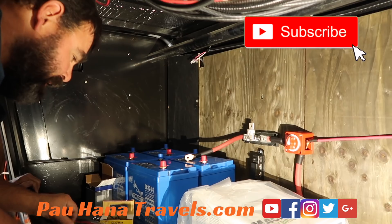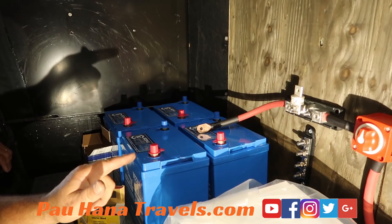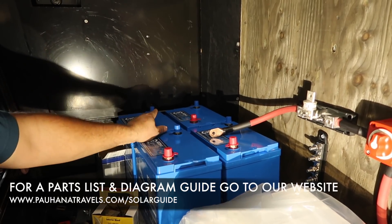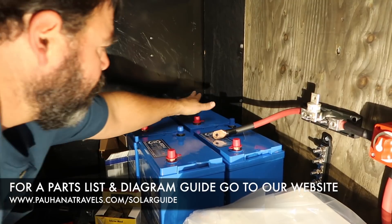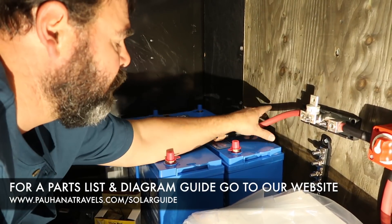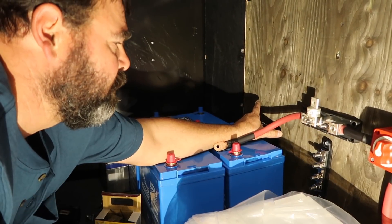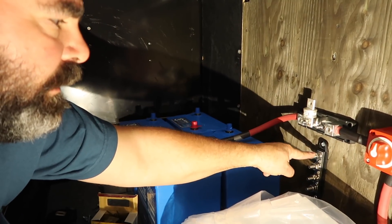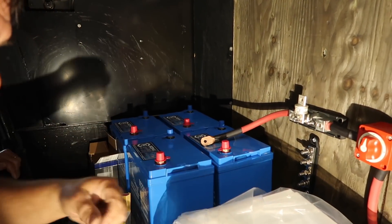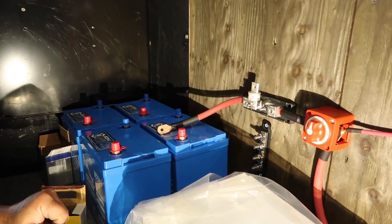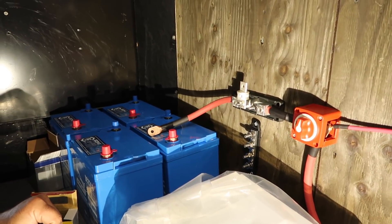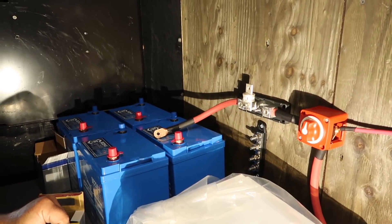Alright, so now we need to talk about the negative run. We're going to run from the negative side over here, negative batteries into the shunt for the battery monitor and then into the distribution bar right here for the other negative loads. So I think that's what we're doing now with this big 4 odd wire.